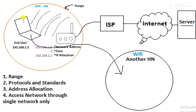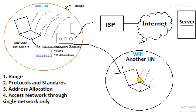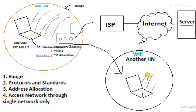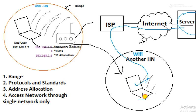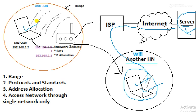When this user tries to communicate again through the new network — through this home network, through the ISP, through the internet, through the server — at this time, the server will identify this user as a different user. Since this user is now part of another home network, the server will try to recognize or treat this user as a different user, even though both of these users are actually the same person. This happens in a stable network.